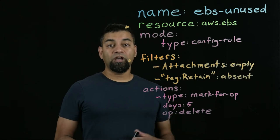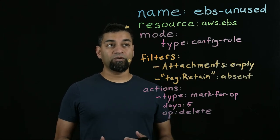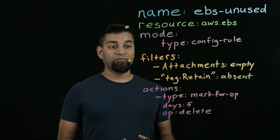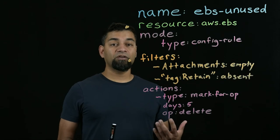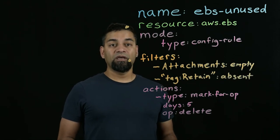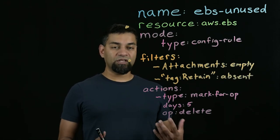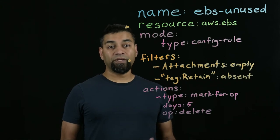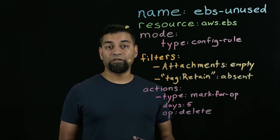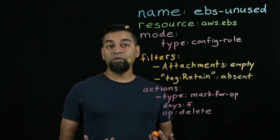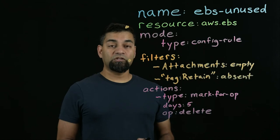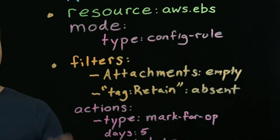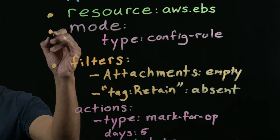Custodian comes with hundreds of resources across different providers and hundreds of filters and actions. You can assemble these filters and actions like Lego bricks in building out your own policy, and so millions of policies can be expressed just using these primitives. Additionally, we have execution mode.